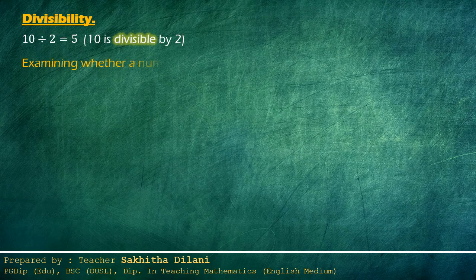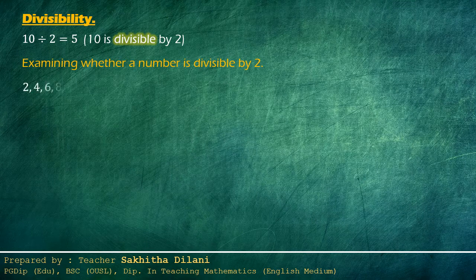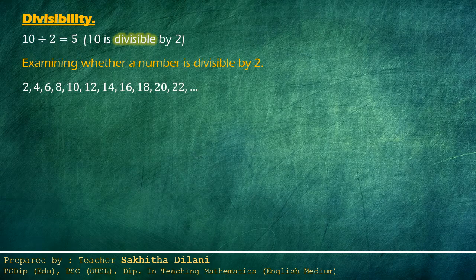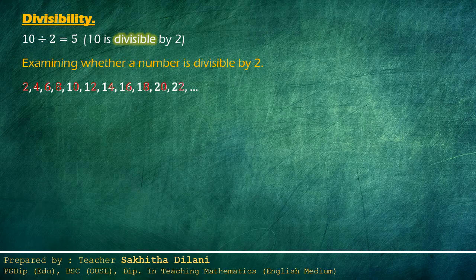Examining whether a number is divisible by two. Let's consider the multiples of two: two, four, six, eight, ten, twelve, fourteen, sixteen, eighteen, twenty, twenty-two. We can write more. Consider the last digit — the ones place digit — of these numbers. They are always two, four, six, eight, or zero, repeating. So we can use this to identify numbers which are divisible by two without a remainder.